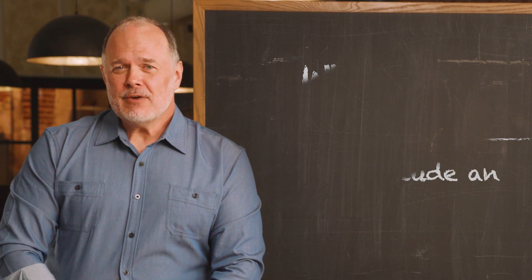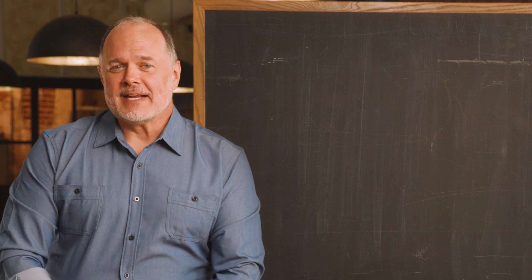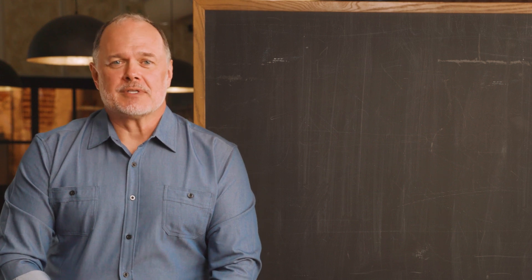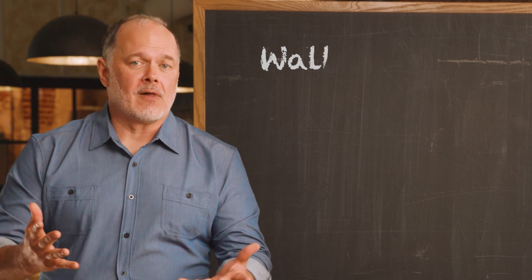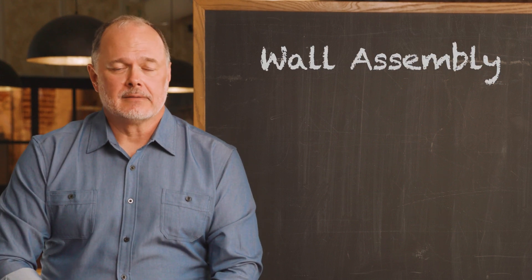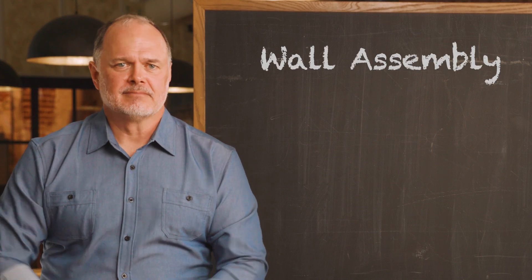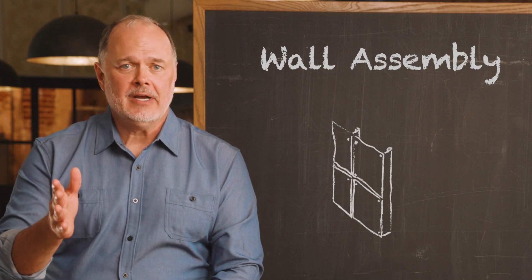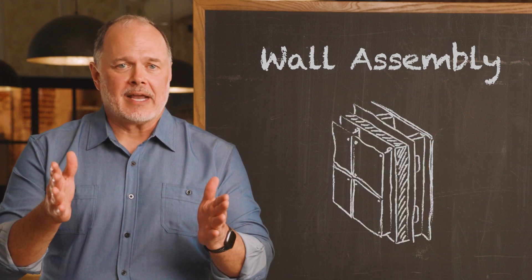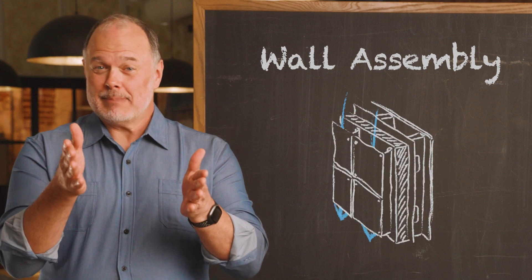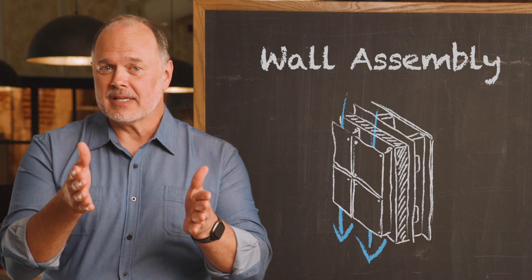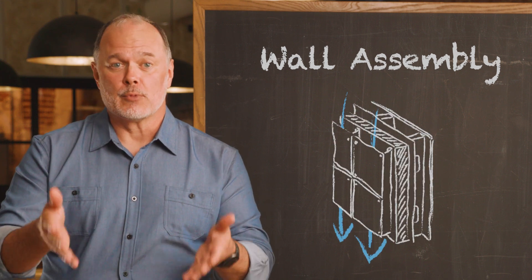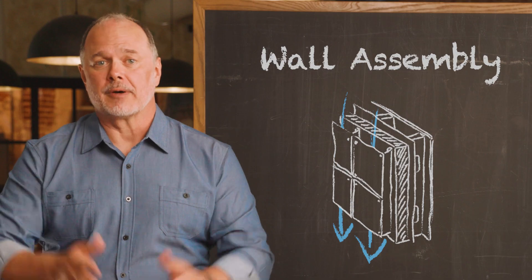You may hear the term rain screen used to describe a wall assembly. What is it? Well, it's simply an assembly that consists of an outer layer, an inner layer, and a cavity between them that allows for the removal of water.